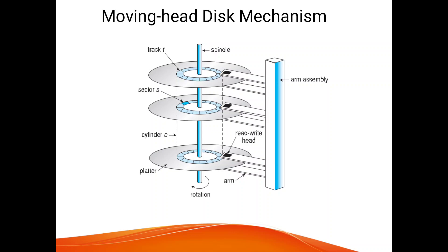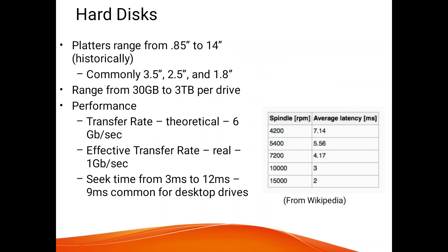Moving head disk mechanisms: the center spindle is rotated. Here it has 3 platters, each platter has tracks, and each track has a number of sectors. Read/write operations are performed by the inter-disk heads. Hard disks have platter sizes ranging from 1.8 inches to 14 inches; commonly 3.5 inches, 2.5 inches, and 1.8 inches are used. Capacity ranges from 30 GB to 3 TB per drive.